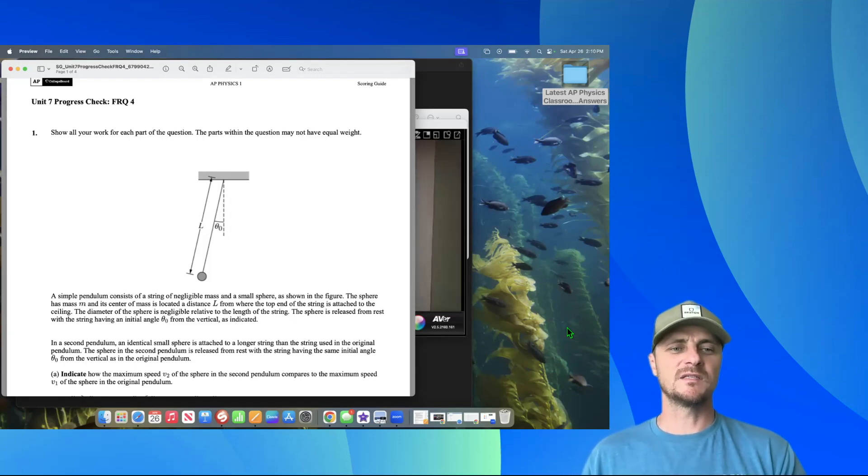So we have a simple pendulum consisting of a string of negligible mass and a small sphere as shown in the figure. The sphere has a mass m and its center of mass is located a distance l from where the top end of the string is attached to the ceiling. The diameter of the sphere is negligible relative to the length of the string. The sphere is released from rest with the string having an initial angle theta naught from the vertical as indicated.